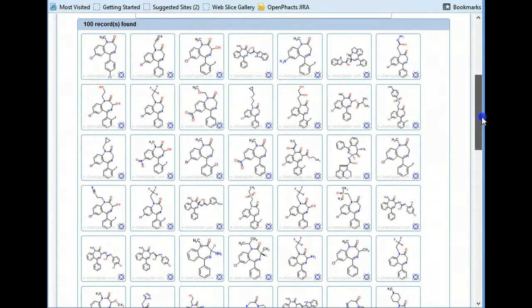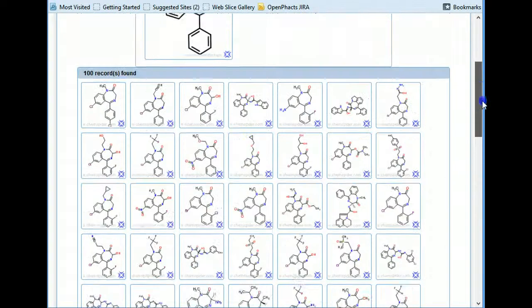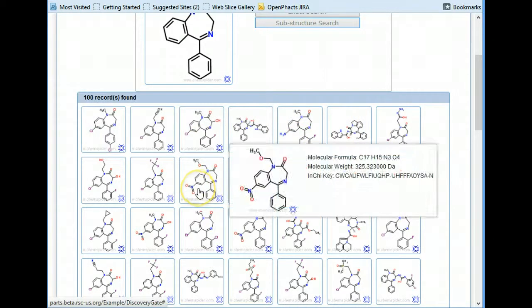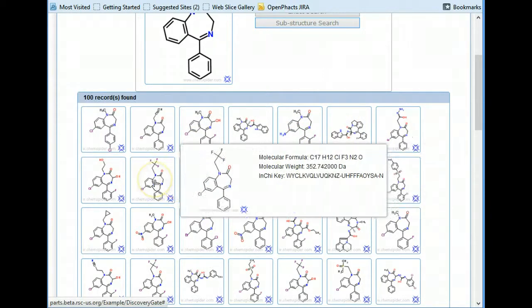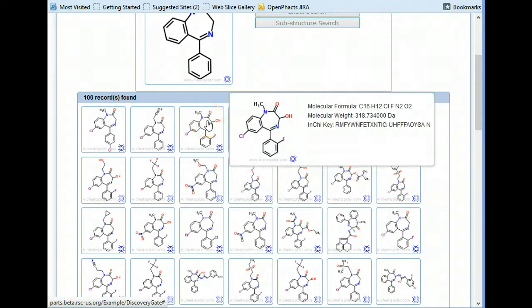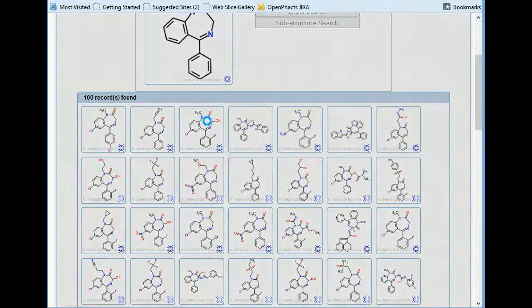We can see they're very much related to their particular substructure moiety. We hover over each of the chemicals, and you can see zoom, molecular weight, molecular formula, etc. Let's take an example of this particular compound.